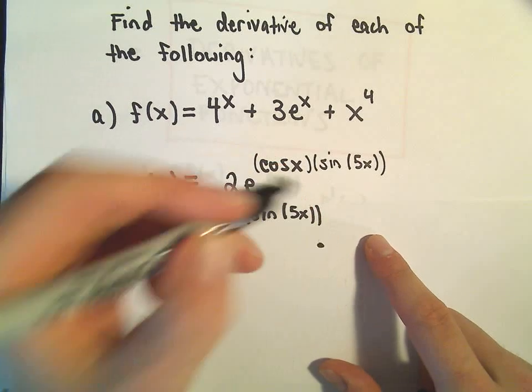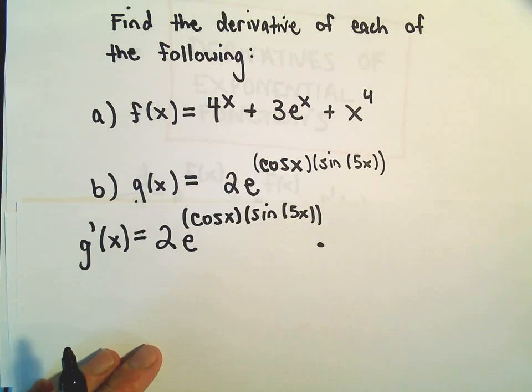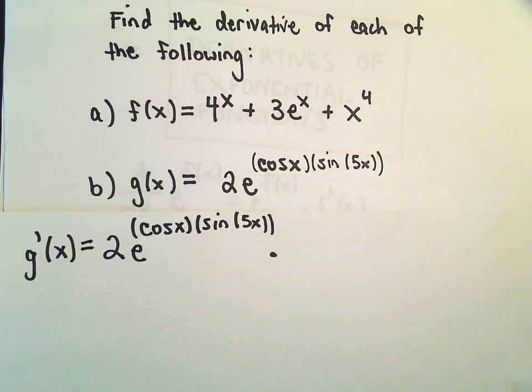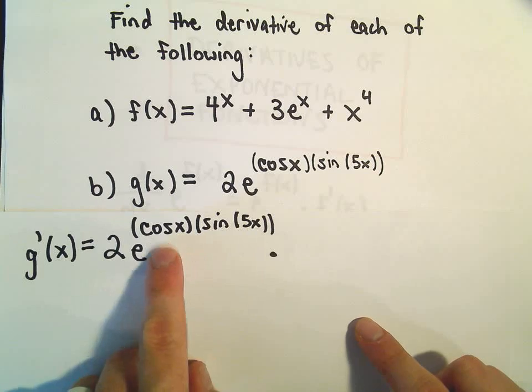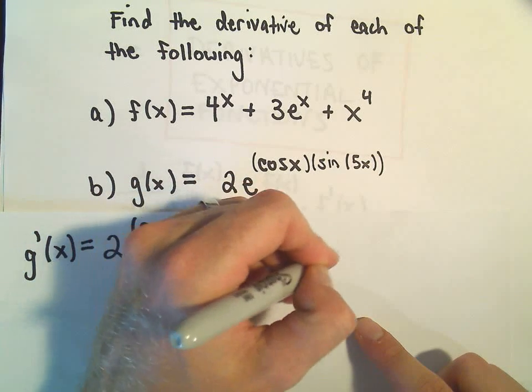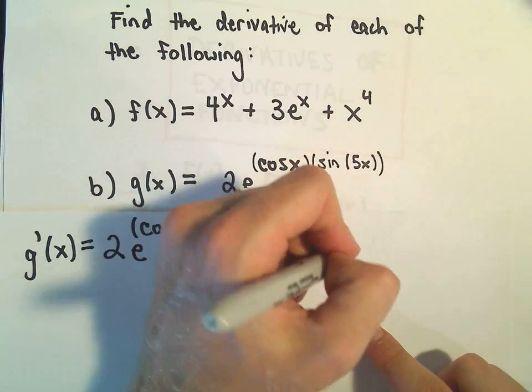But then what we're going to have to do is take the derivative of this exponent. And to take the derivative of that exponent, we would just have to use the product rule. So if we take the derivative of cosine x, we'll get negative sine x. And then we can leave the sine of 5x alone.